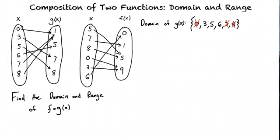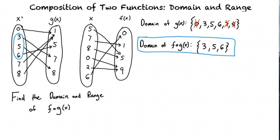3, 5, and 6 give values for g of x that are inside of the domain of f of x, and so we can take those as our domain. Now that we have a new domain, we can use this to find the range for our composite function.